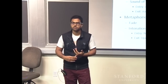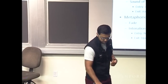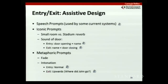Finally, we wanted to explore different types of entry and exit mechanisms. Current systems use a big speech prompt — 'John has entered the meeting' — which gets annoying if people are coming in and going out constantly. We started with iconic prompts: the sound of a door opening, followed by the name for entry; the name and then the door closing for exit. We used different sequencing because participants said it was hard to differentiate between door opening and door closing.